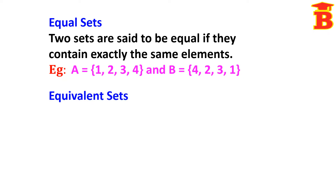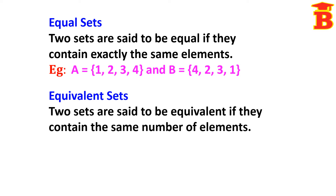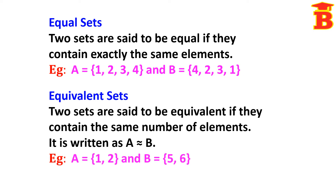Next, equivalent sets. Two sets are said to be equivalent if they contain the same number of elements. It is written as A ~ B. For example, consider set A = {1, 2} and set B = {5, 6}. The elements are different, but the number of elements is the same — n(A) = 2 and n(B) = 2. If the number of elements are equal, then the sets are equivalent.